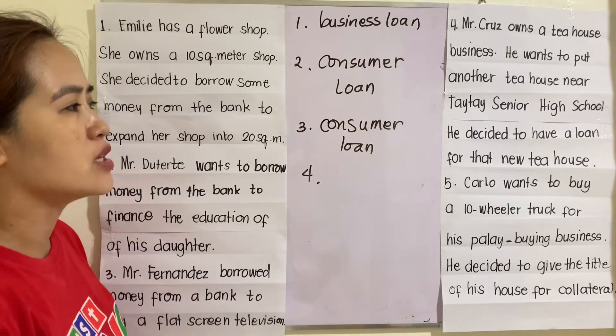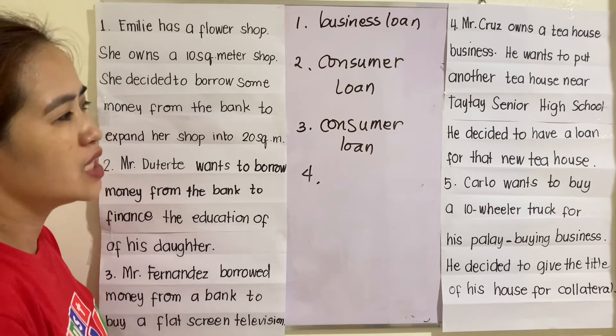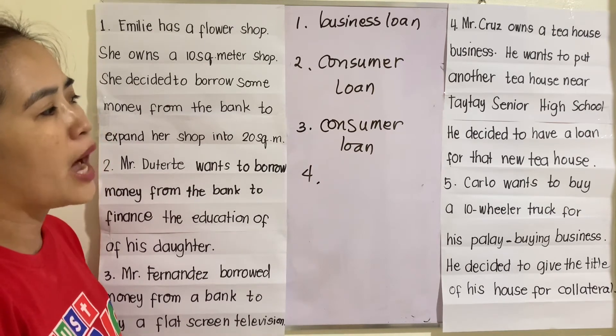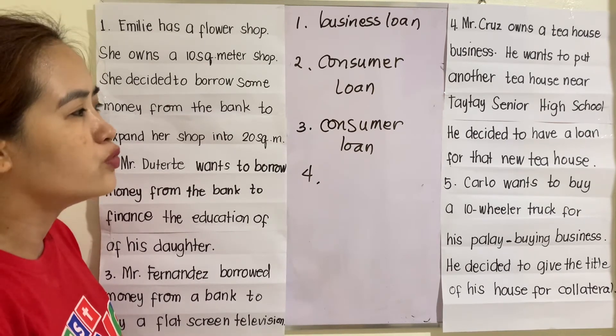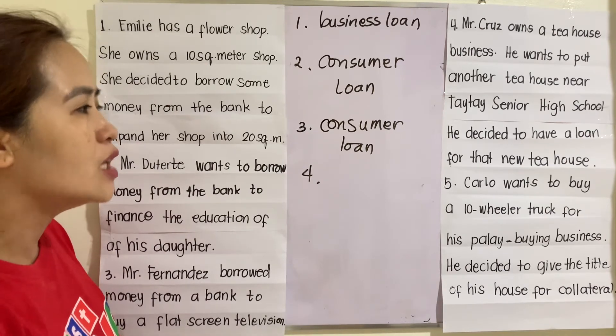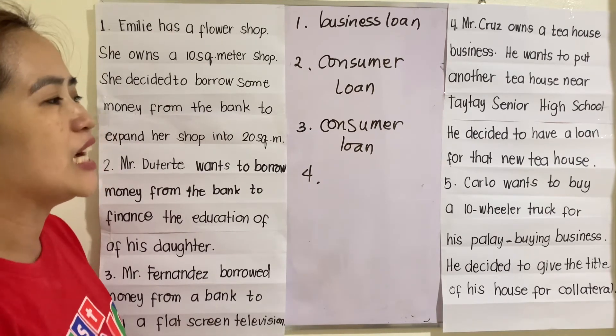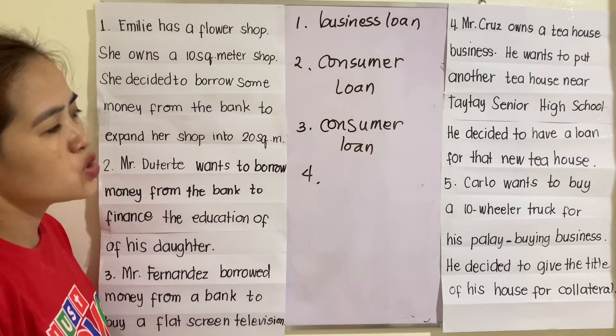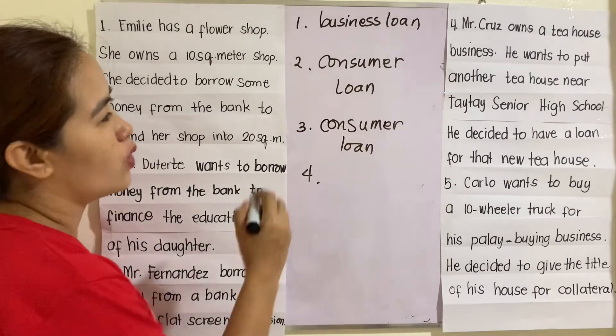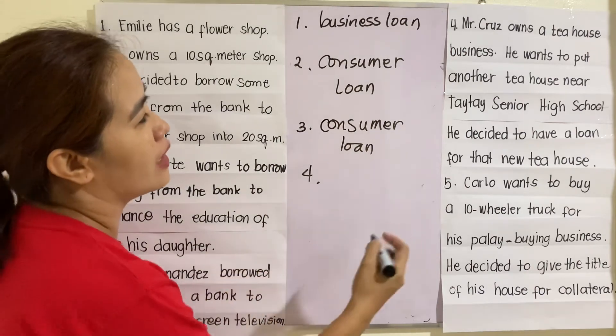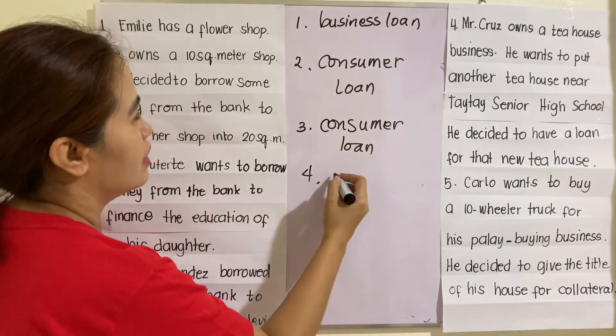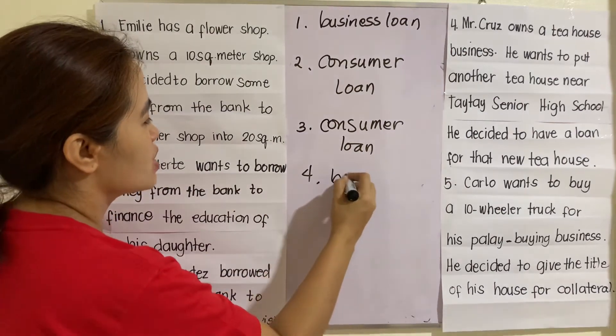Number four: Mr. Cruz owns a tea house business. He wants to put up another tea house near Taytay Senior High School and decided to take out a loan for that new tea house. That is, of course, a business loan.